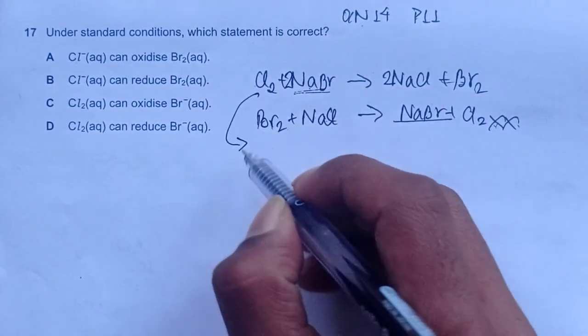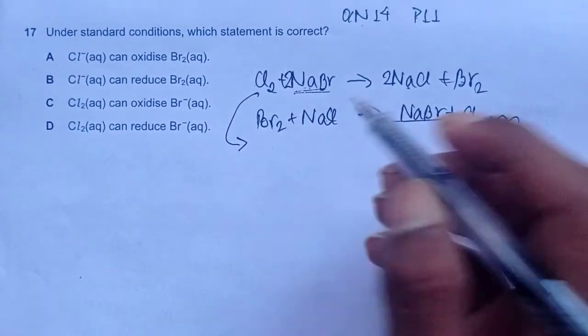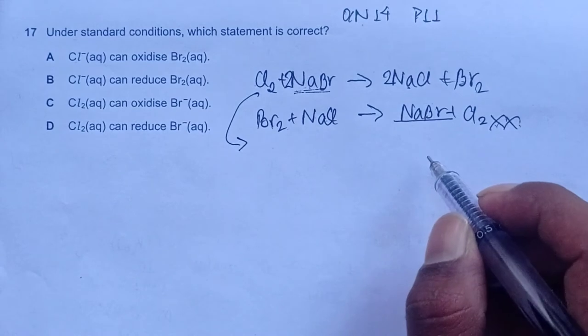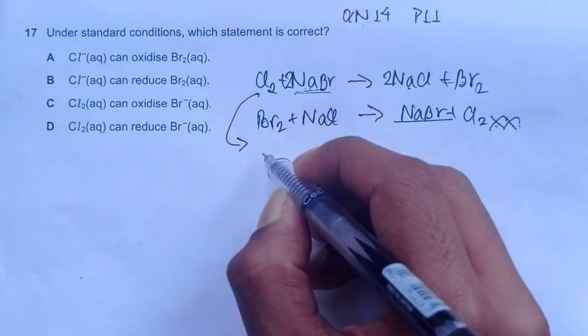Now, if we convert this equation into its ionic form, sodium ions are spectator ions, they take no part whatsoever in this reaction.